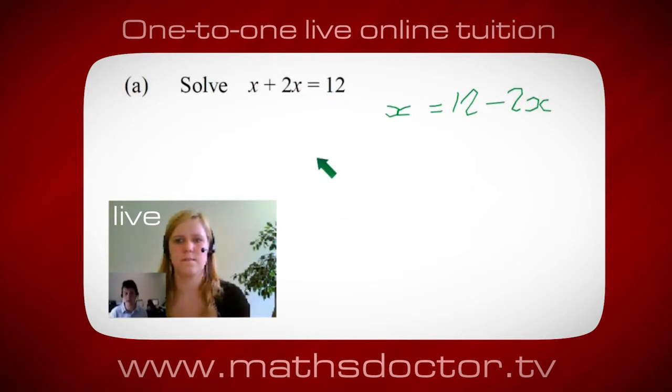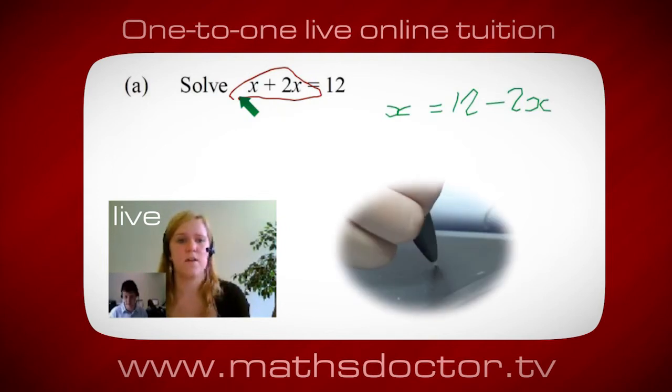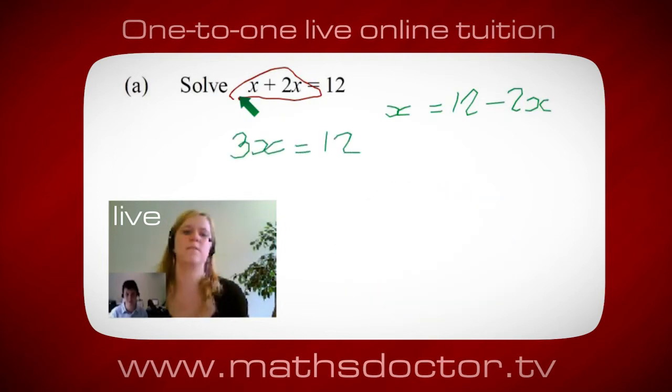Okay, so a lot of the time we want to get x by itself, but what we want to do first is get all of these x's together. So can you see anything we can do with this to get all these together in one place? Oh okay, it's 3x isn't it? Yeah, absolutely, equals 12. Oh, and so x = 4. Brilliant, spot on, well done.